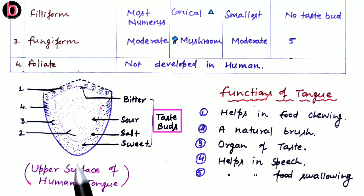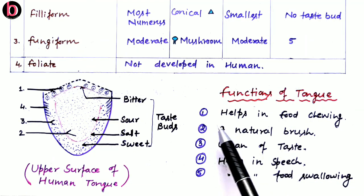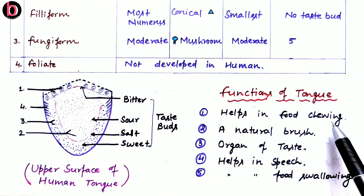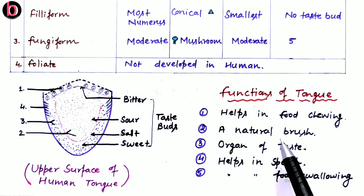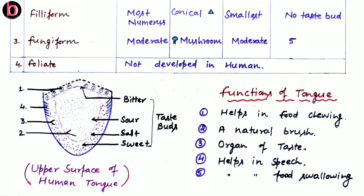The functions of the tongue include: helping in chewing food by mixing it with saliva; acting as a natural brush for cleaning the teeth; serving as an organ of taste due to its numerous taste buds; helping in proper speech, as without the tongue we can only produce sounds but cannot convert them into proper words; and assisting in swallowing or deglutition of food, which is the passage of food from the oral or buccal cavity into the esophagus or food pipe.